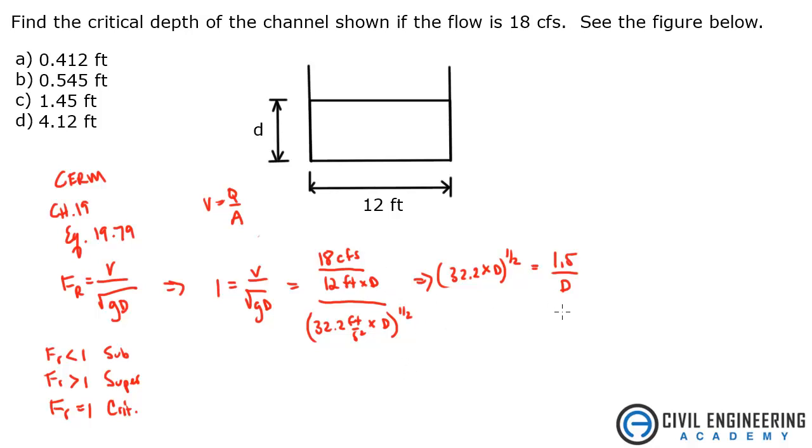Alright, the next thing I'm going to do is, I guess we'll just figure out this side. So 32.2 to the one half is 5.67 times D to the one half. And we're going to multiply all this by D. So I'm going to take D to the other side and set that equal to 1.5.